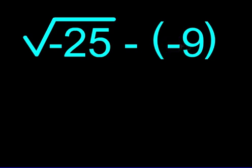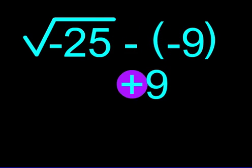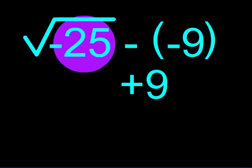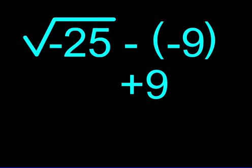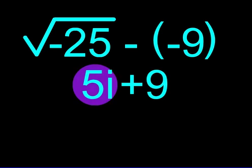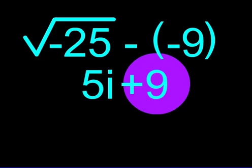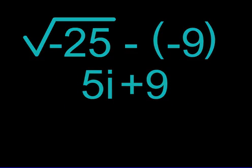With parentheses, whenever there is a negative sign outside and a negative sign inside, we can combine them to make a positive. On the other side we have the square root of negative 25. From our previous example we learned that this equals 5i. So our answer is 5i plus 9. Let's do one last problem.